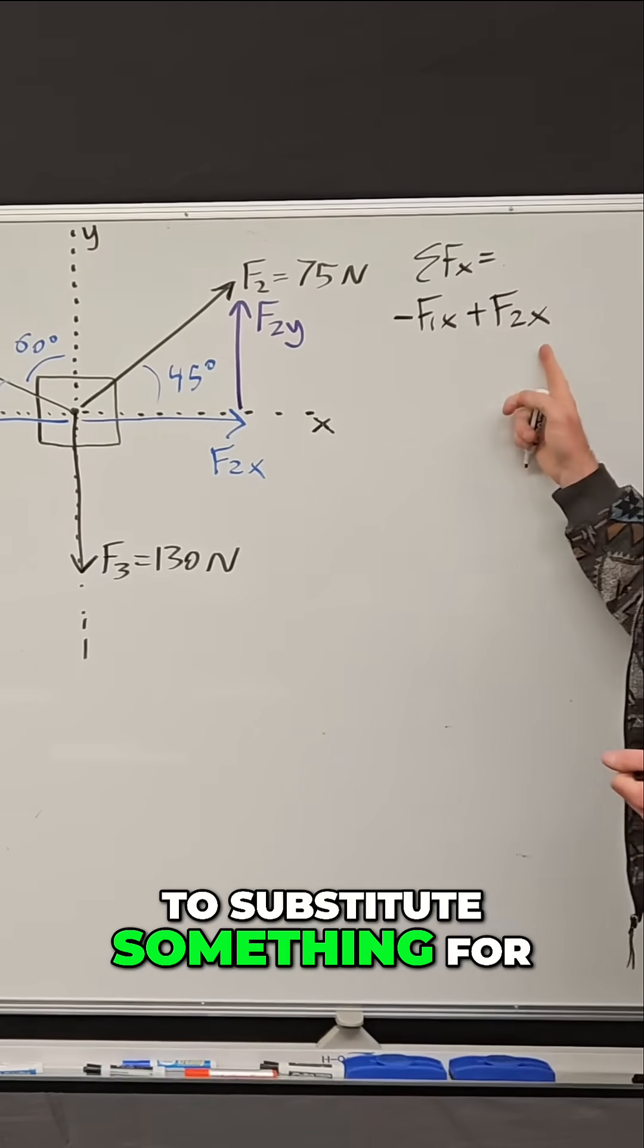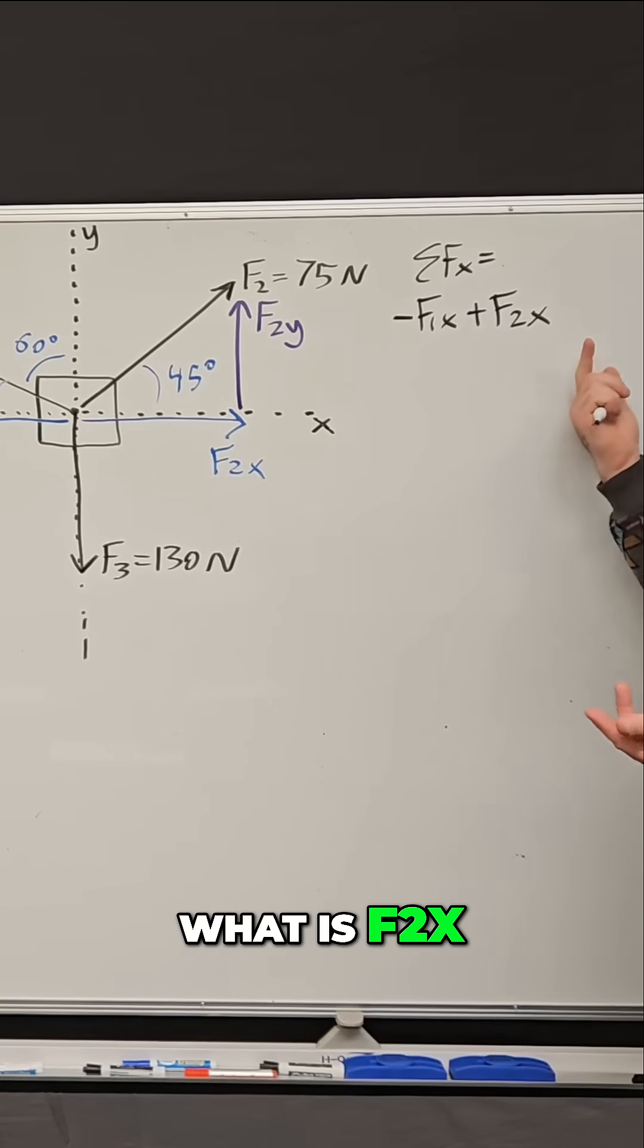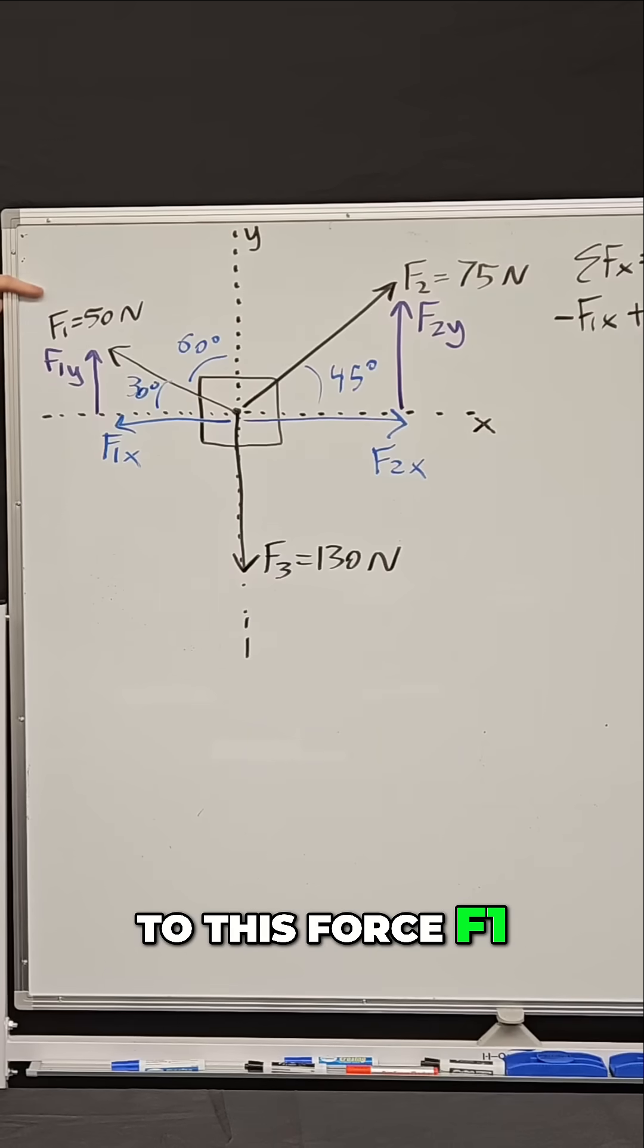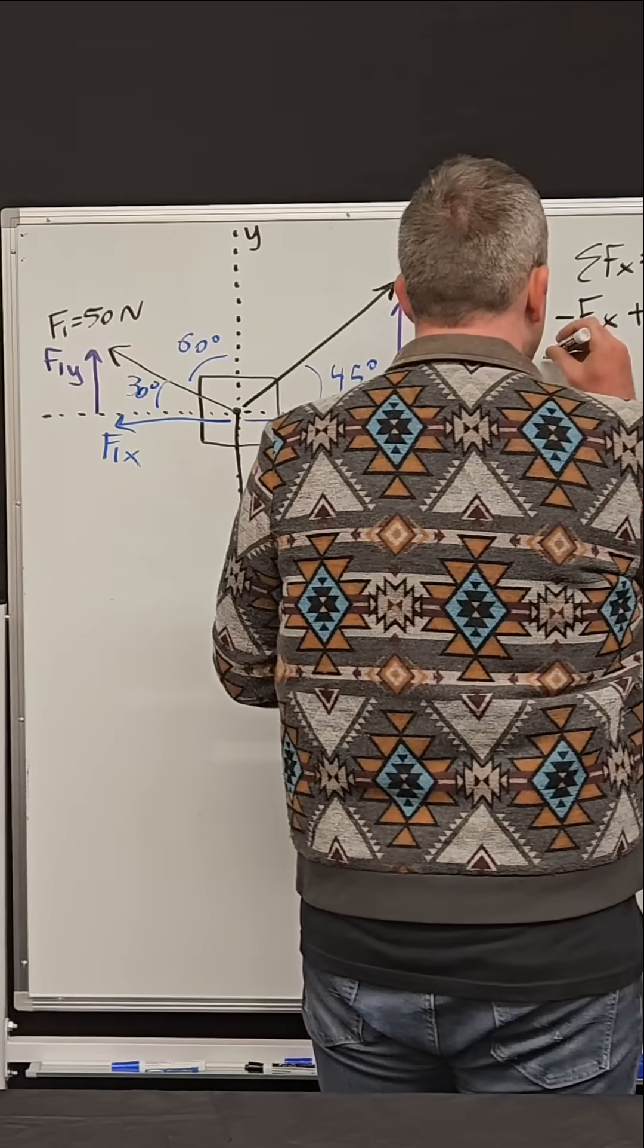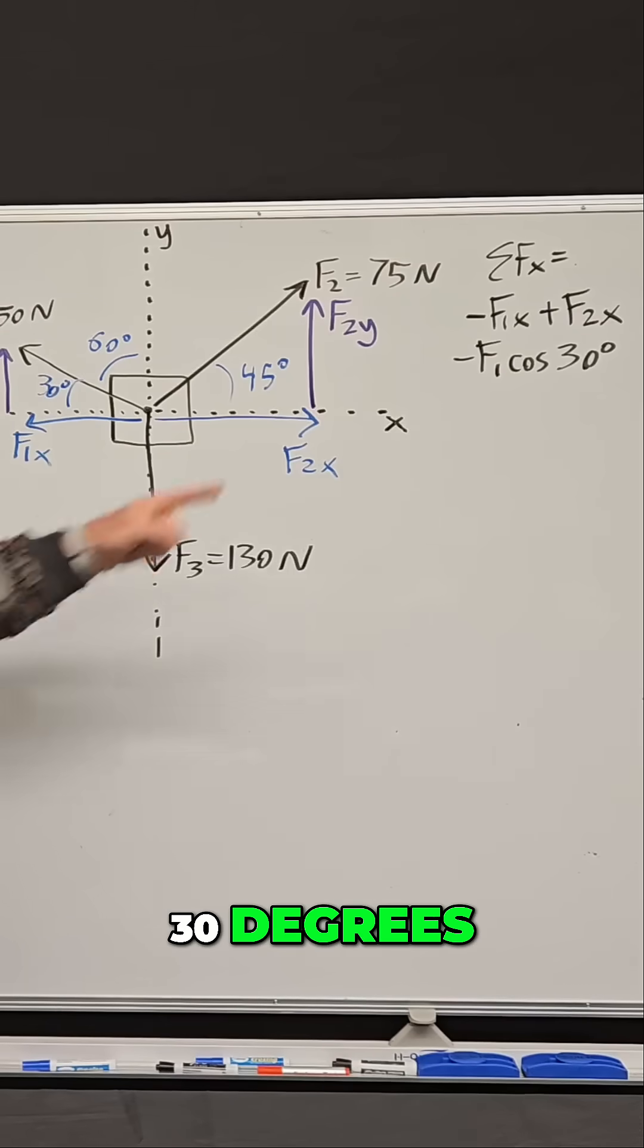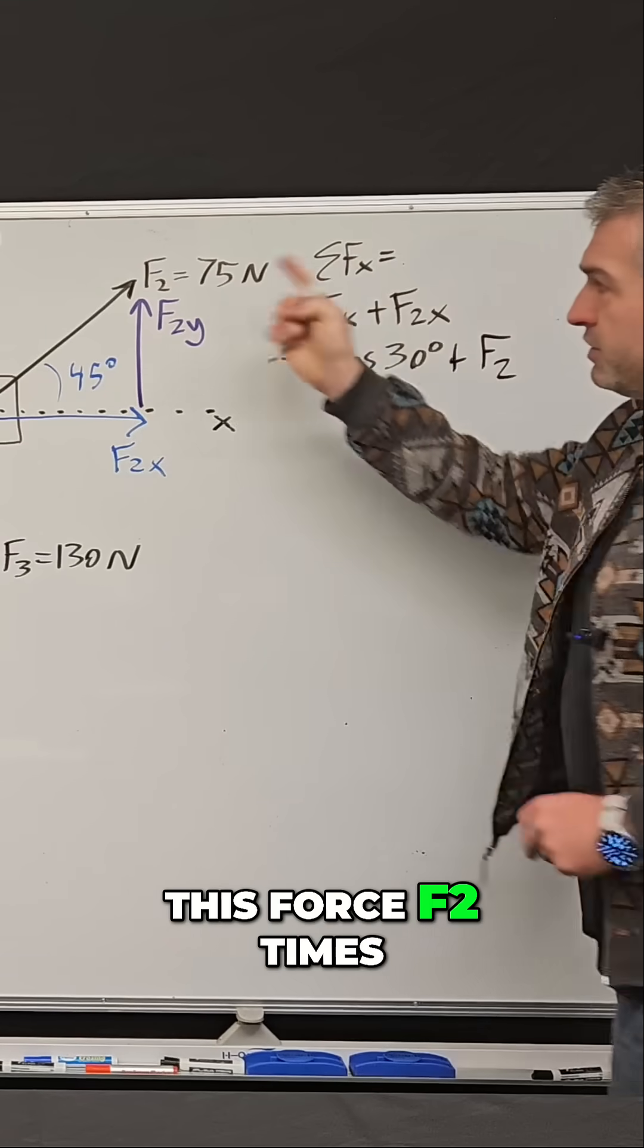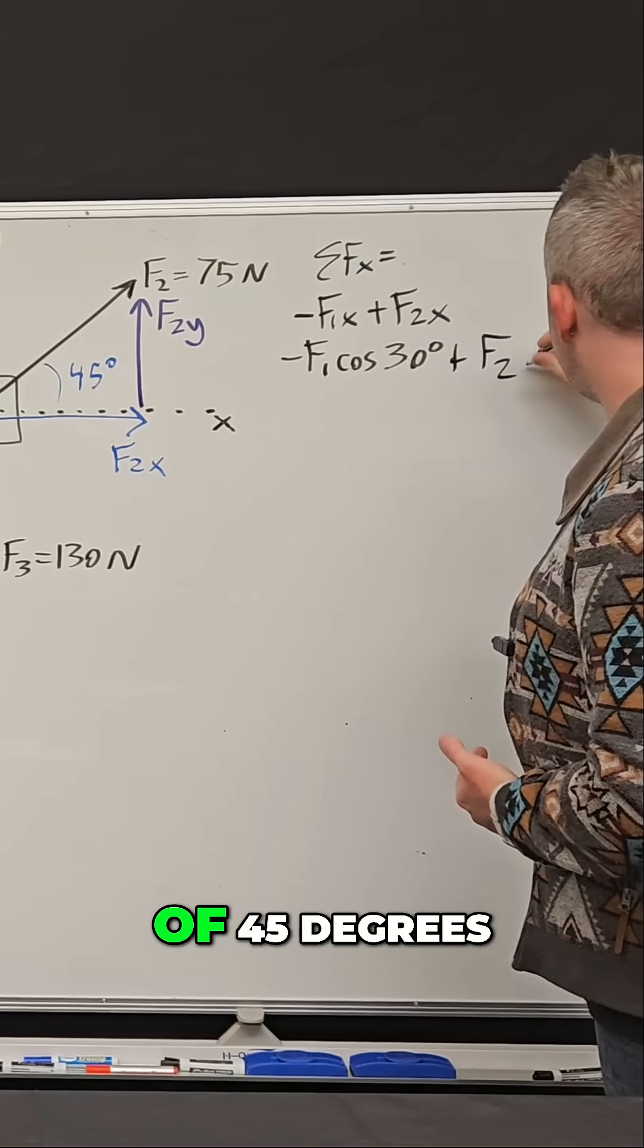Now I need to substitute something for each of these. What is f1x? What is f2x? According to trigonometry, f1x equals this force f1 times the cosine of this angle. So I'll substitute f1 cosine 30 degrees. What about f2x? f2x equals this force f2 times the cosine of this angle, so times the cosine of 45 degrees.